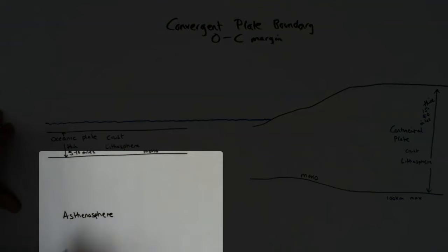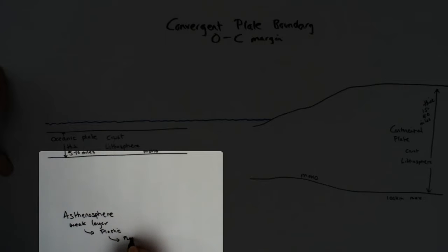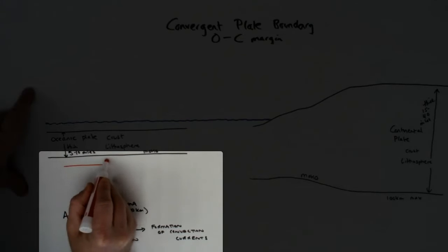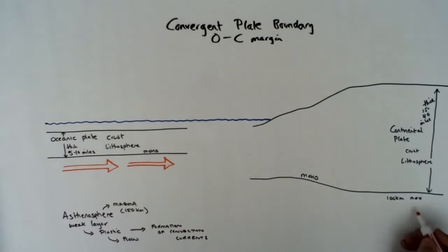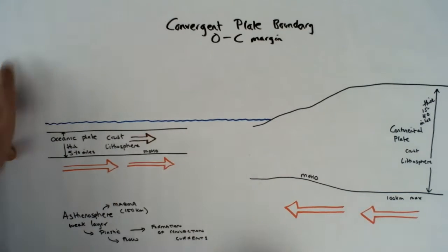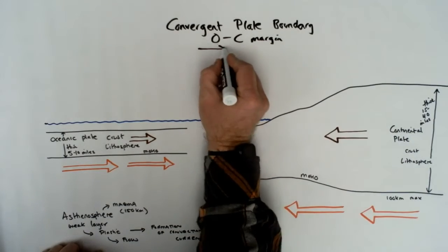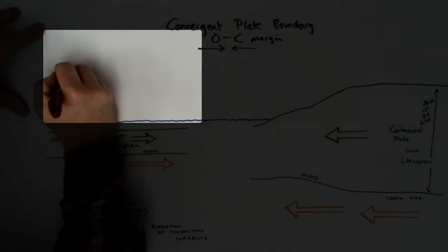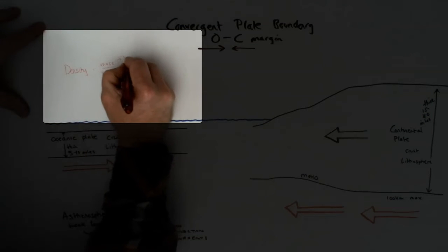Underneath the crust and the lithosphere is the asthenosphere. This is the thicker layer where we have movement and convection currents. It's plastic in behavior; it flows due to the heat, and this convection current is the mechanism that moves and drives plate tectonics. The convection currents are going to move the plates towards each other in a convergent situation. To understand what happens when these two plates collide, we need to look at density — mass over volume — based on the composition of each plate.